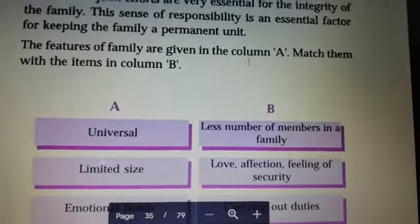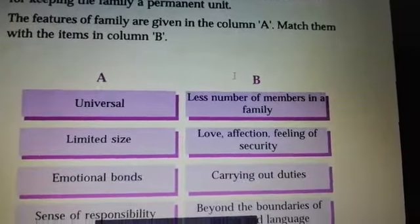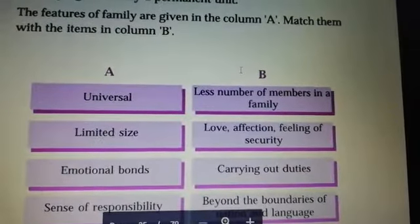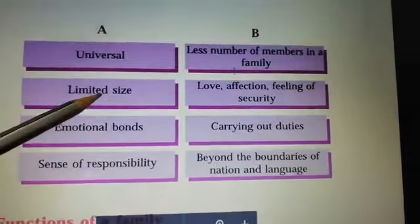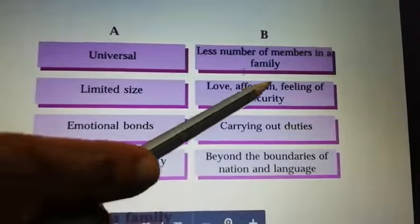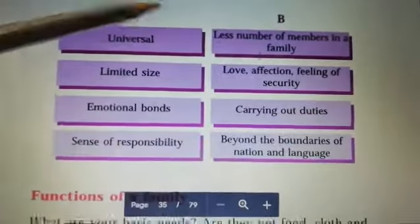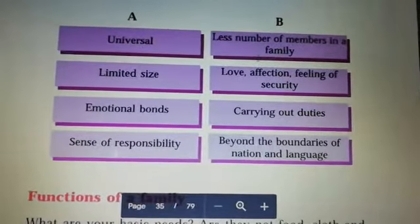Features of a family are given in column A — match them with items in column B. Universal means beyond the boundaries of nationality and language. Limited size means fewer number of members in a family. Emotional bond includes love, affection, feeling of security, etc. Sense of responsibility means carrying out duties. Use only pencil. Read the lesson two or three times. I hope all of you understood. Thank you.